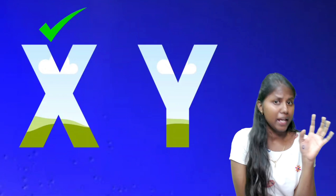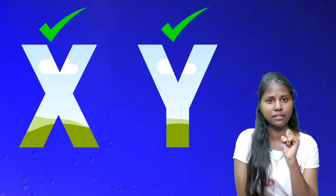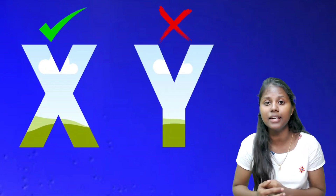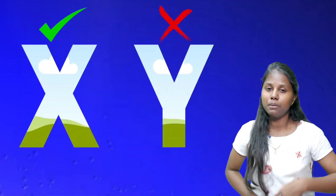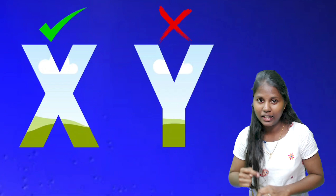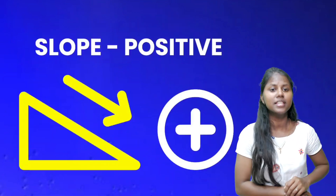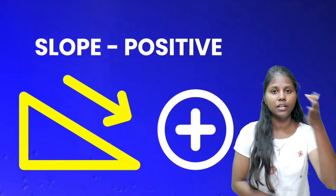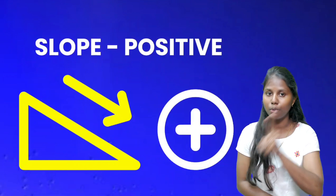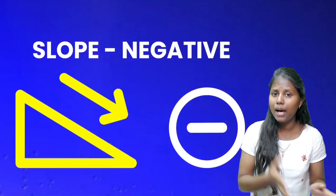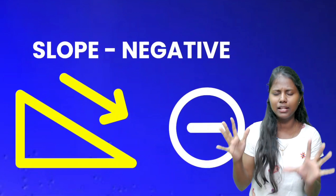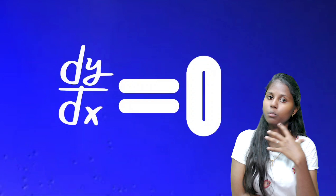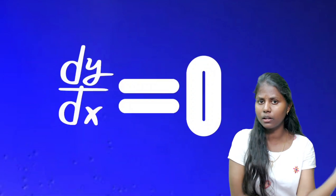If x decreases then y decreases - that is the decreasing function. But if you study the graph or function, that is the difference. So if you look at this graph, you can get a sub-function. If you differentiate the slope, this slope is the increasing function. This slope has a negative value - that is the decreasing function. So if it is negative or decreasing, you can easily calculate this. But now the function is given - that is the over-interval increase and over-interval decrease.